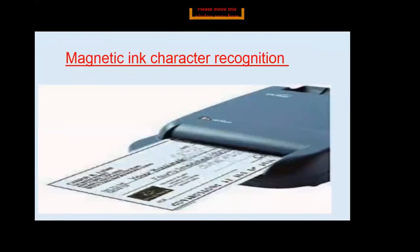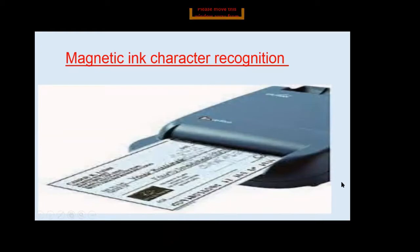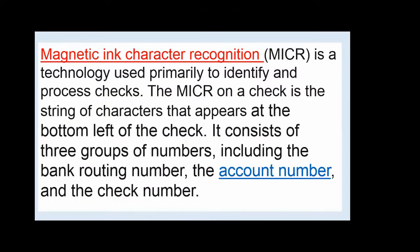Moving on to the next input device: the magnetic ink character reader. This is the picture of a magnetic ink character reader. These magnetic ink character recognition devices are used mostly in banks to read checks. If you observe a check, at the bottom there are some types of codes written, and these codes are read by the magnetic ink character reader.